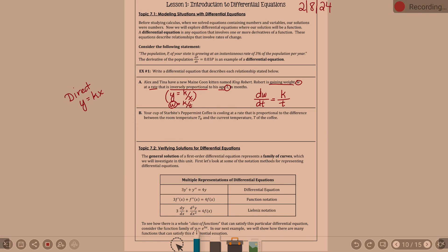Your cup of Starbucks peppermint coffee is cooling at a rate that is proportional to the difference between the room temperature, T sub R, and the current temperature, T, of the coffee. So it's cooling — there's something going to be negative. We need to think in terms of cooling at a rate proportional to the difference between room temperature and current temperature.